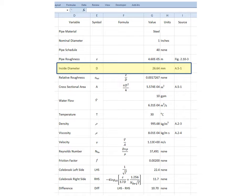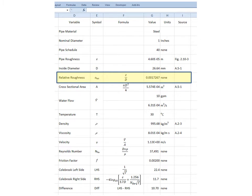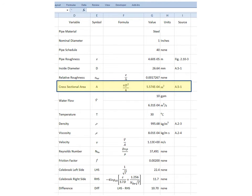Table A.5-1 gives us an inside diameter of the pipe equal to 26.64 millimeters. Our relative roughness is just the pipe roughness divided by the diameter, and that is given to us as 0.0017267. This is dimensionless. Our cross-sectional area is 5.57 times 10 to the minus 4 meters squared.